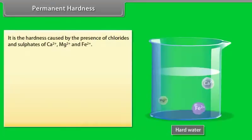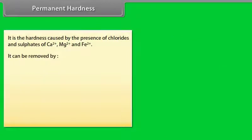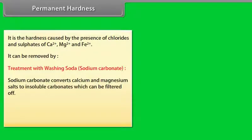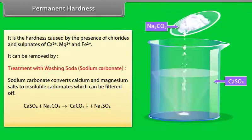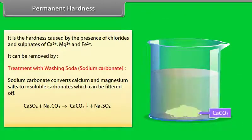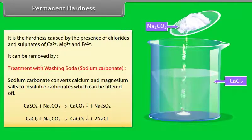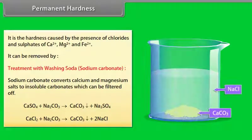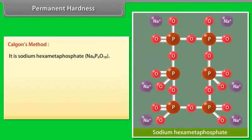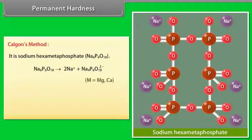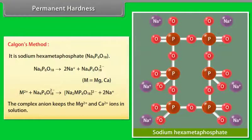Permanent hardness is caused by the presence of chlorides and sulfates of Ca2+, Mg2+, and Fe2+. It can be removed by treatment with washing soda or sodium carbonate. Sodium carbonate converts calcium and magnesium salts to insoluble carbonate which can be filtered off. Calgan's method uses sodium hexametaphosphate. The complex anion keeps the Mg2+ and Ca2+ ions in solution.